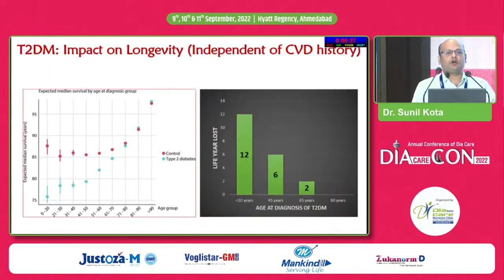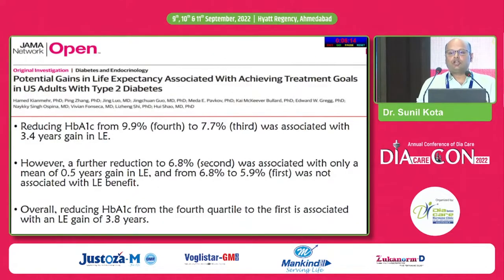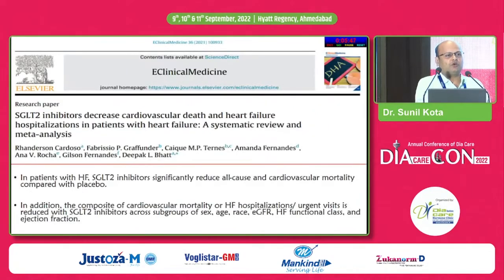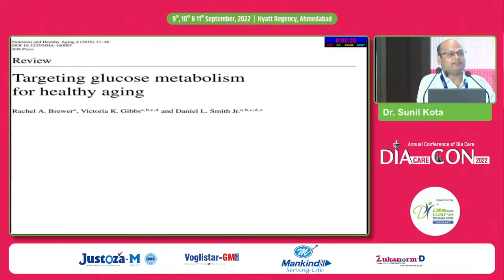Longevity is important, because as the age of onset gets younger there is a higher chance of losing lives. A JAMA 2021 paper says reduction of HbA1c from the highest quartile of 9.9% to the first quartile of 5.9% is associated with a life expectancy gain of around 3.8 years. A Denmark registry shows that discontinuing oral drugs 10 years before death is associated with higher chances of death. SGLT2 inhibitors are predominantly anti-hyperglycemic agents with wonderful beneficial effects on all-cause and cardiovascular mortality. Drugs like metformin, pioglitazone, alpha-glucosidase inhibitors, and SGLT2 inhibitors are actually helping us in the healthy aging process.